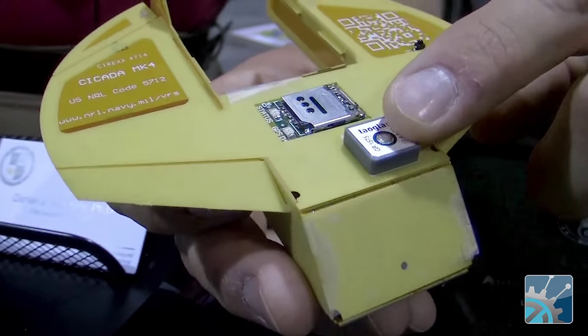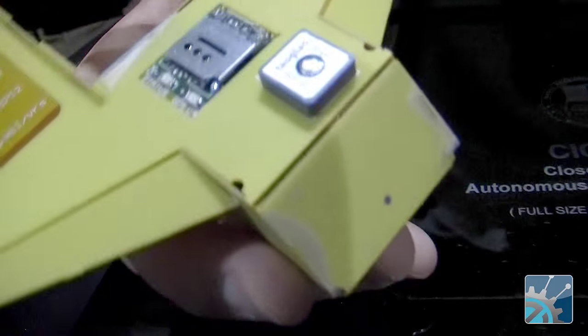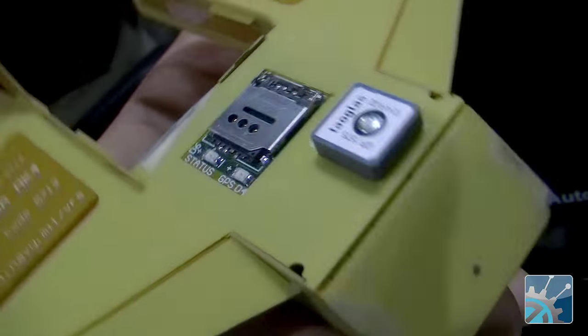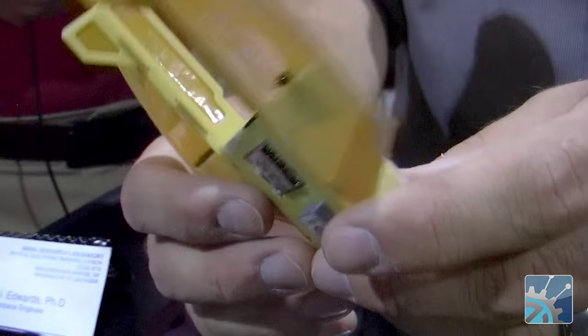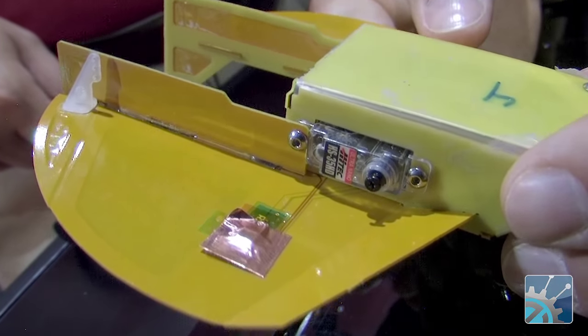You'll notice there's a GPS sensor as the other ones had, as well as the addition of a SIM card. An SD card login is in there as well to collect data. The layout is very similar to the other one, the Gen 2 Cicada.